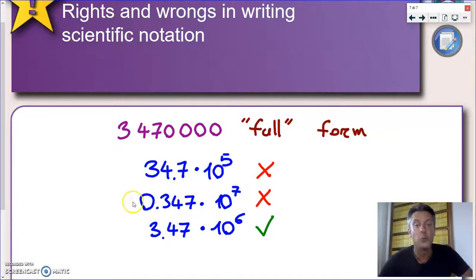And this one, well, this one has one digit before the decimal point, but unfortunately, that digit is zero. That digit has to be at least one. So the only way.